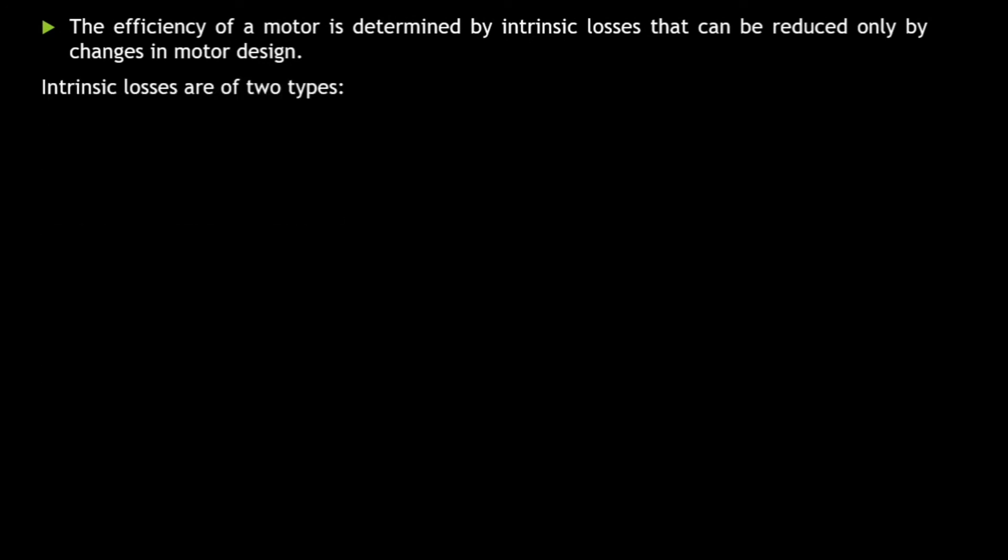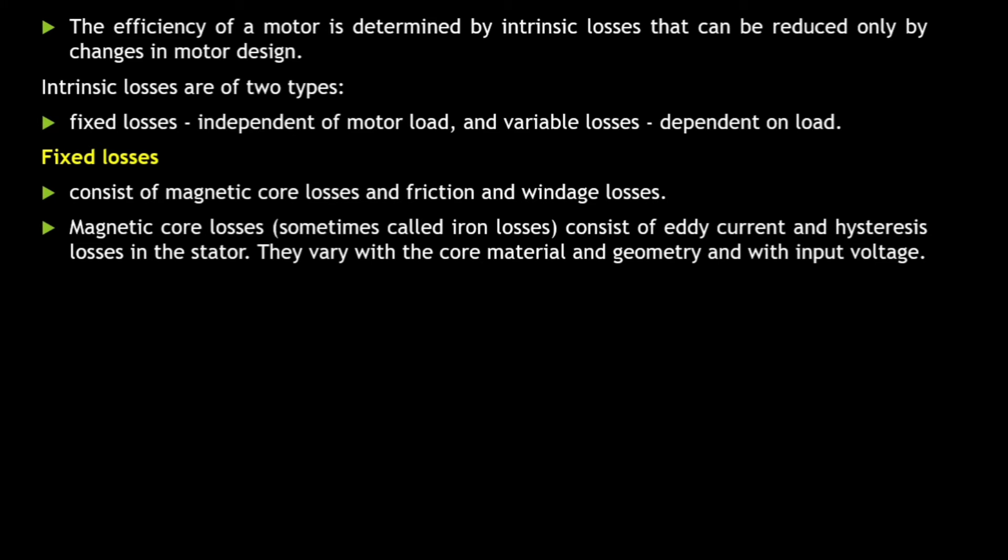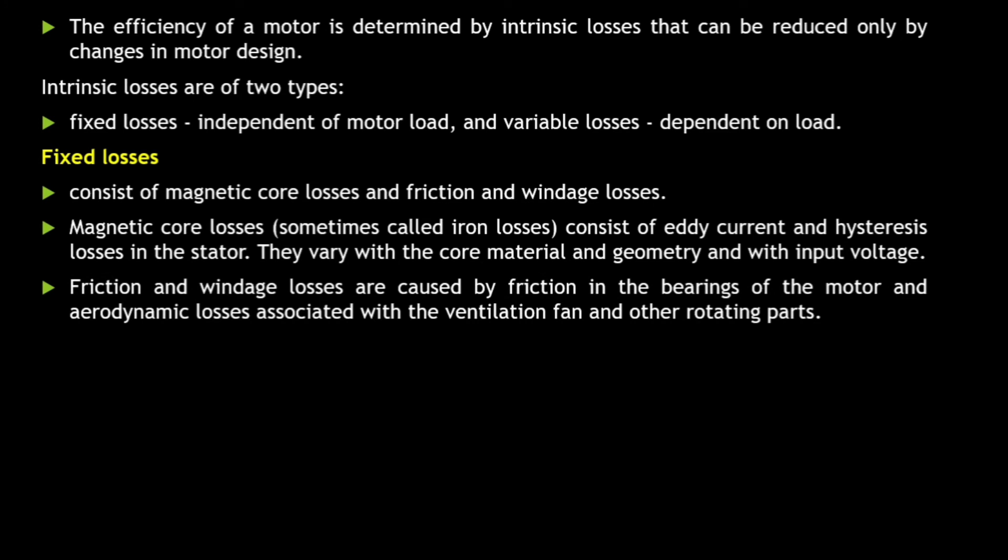These losses are basically of intrinsic type. So intrinsic type, there are two losses: there are fixed losses. These fixed losses are basically consisting of magnetic core losses and friction and windage losses. Now, magnetic core losses, it is comprising of the eddy current losses and hysteresis losses in the stator. So the core material is because of the eddy current and hysteresis losses, so we call iron losses. So fixed losses consist of magnetic core losses. Then, friction and windage losses are caused by friction in the bearings.